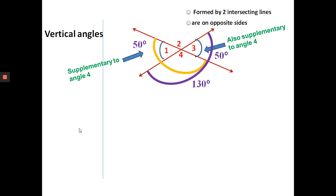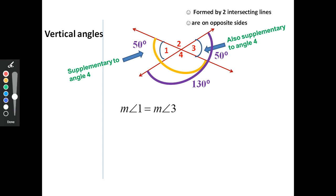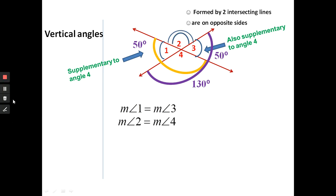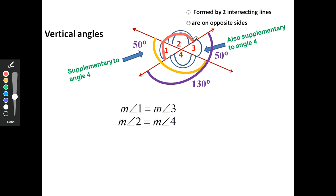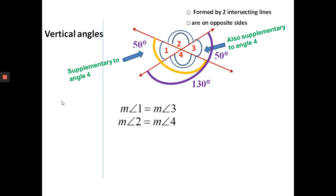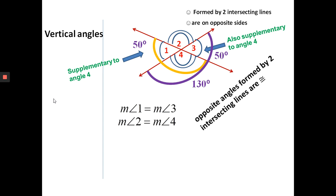Angle four is still 130 degrees, so angle one and angle three must be equivalent — they have the same measurement because they're both supplementary to the same angle four. Angle two and angle four are congruent for the same reason: angle two is supplementary with angle one, making it 130 degrees, and angle four is supplementary to angle one as well. So these properties tell us: vertical angles are congruent — equal in measurement.